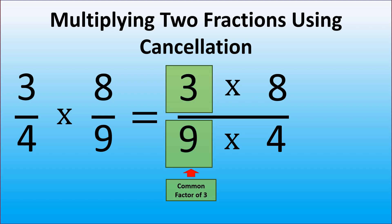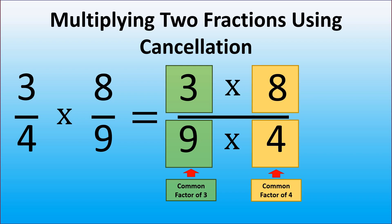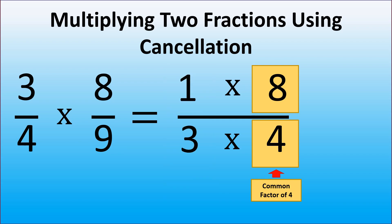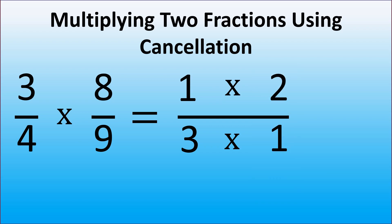Now it is easy to see a common factor of 3 in 3 and 9, and a common factor of 4 in 8 and 4, and we can simplify the expression. We divide 3 and 9 by a common factor of 3, and that gives us 1 in the numerator and 3 in the denominator. We also divide 8 and 4 by a common factor of 4, and that gives us 2 in the numerator and 1 in the denominator.